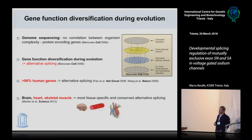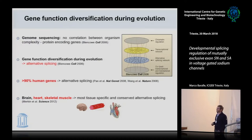This means we have to carry on sequencing and look at transcriptomics, because gene function diversification during evolution is really regulated at several levels: the chromatin level, the transcriptional networks, co- and post-transcriptional and translational regulation, and of course alternative splicing.